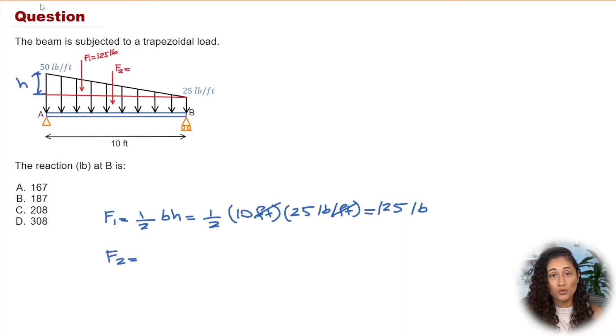So again we're just gonna do the area of the rectangle which is just B times H. Now B is going to be the span of the beam which is 10 feet, and then we're gonna multiply it by the height of the rectangle which is 25 pounds per foot. Now if you plug in these numbers you're gonna get 250, and this is gonna also have the units of pounds.